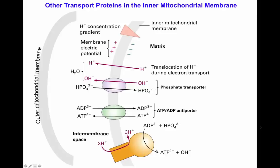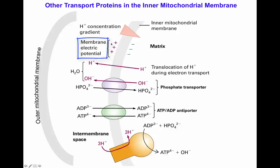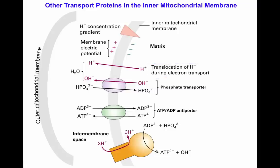Now let's look at some of the proteins involved in the transport of intermediates inside the mitochondrial membrane. In this image, we have an extract of the inner and outer mitochondrial membranes. In the middle, there is a proton concentration gradient, with a higher concentration of protons in the intermembrane space and a low concentration in the matrix. This also causes a membrane electric potential, being more positive on the outside of the inner membrane and more negative on the inner portion.